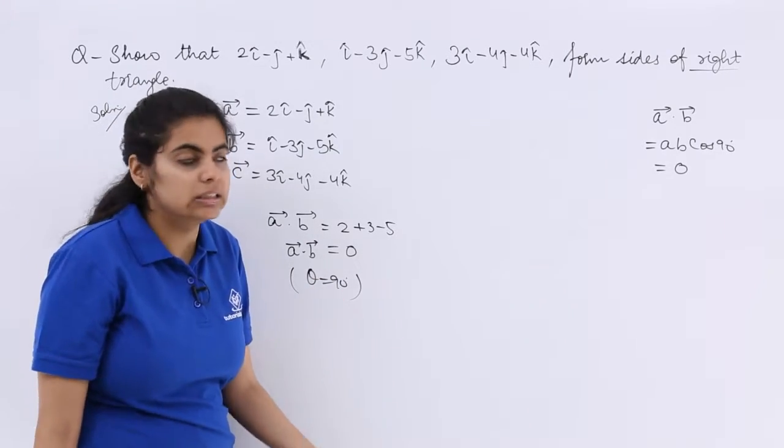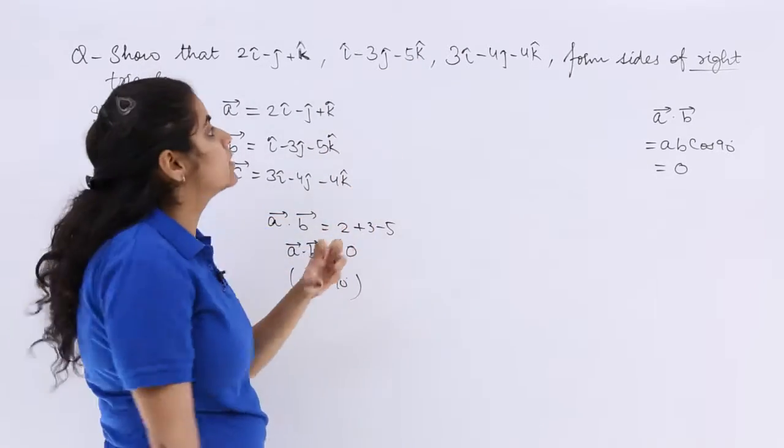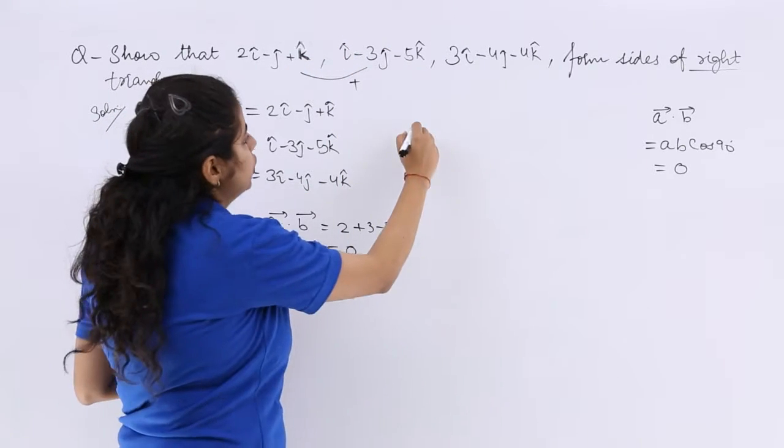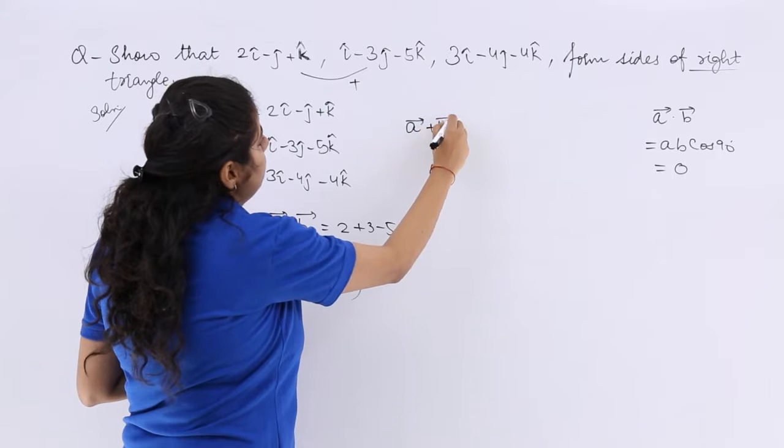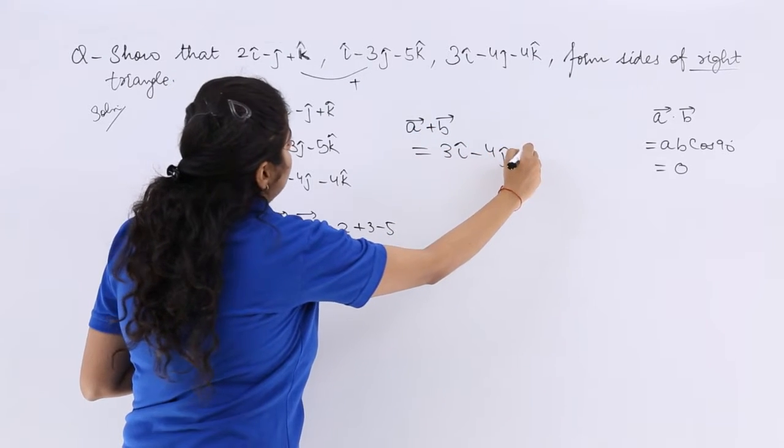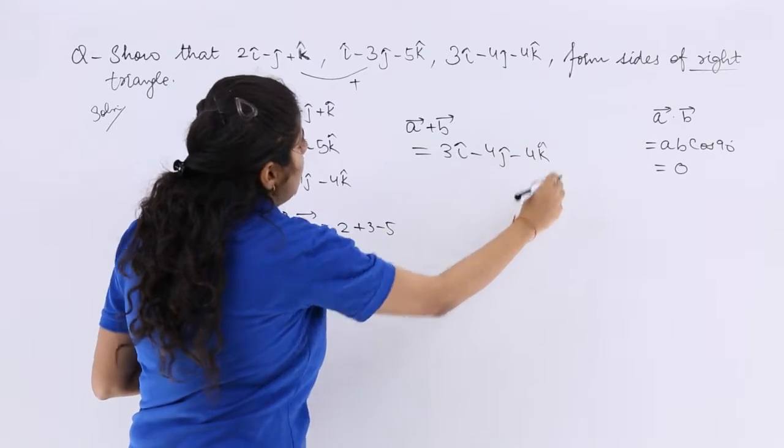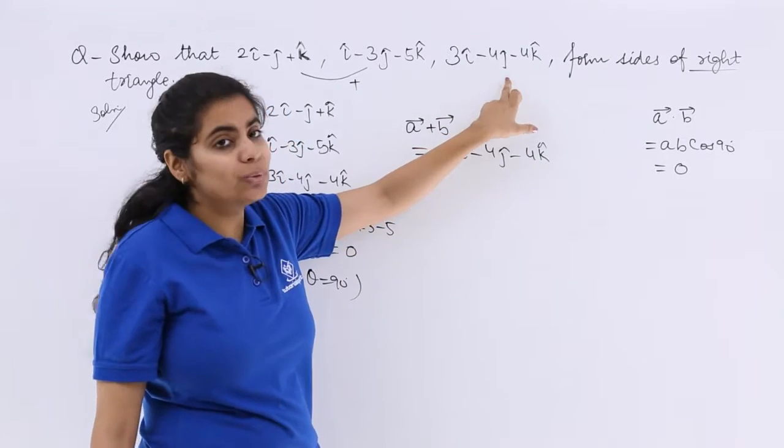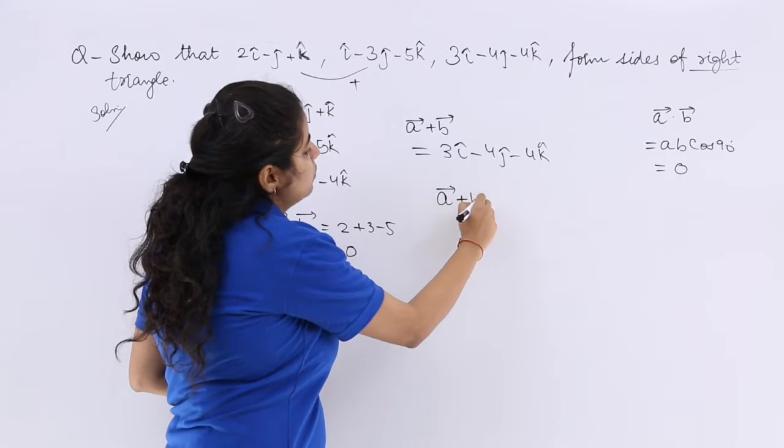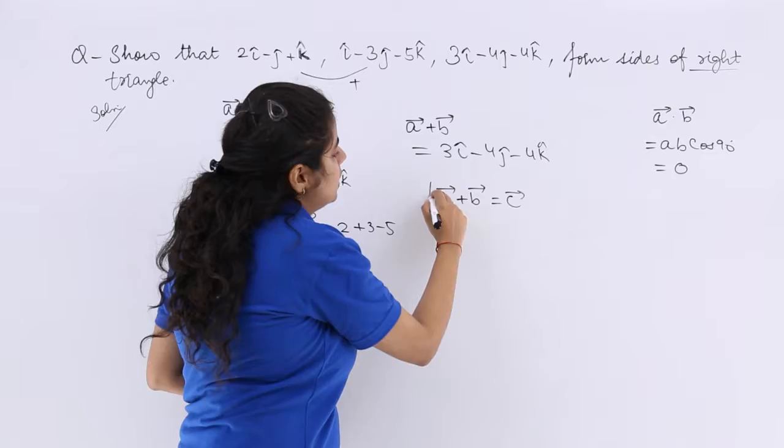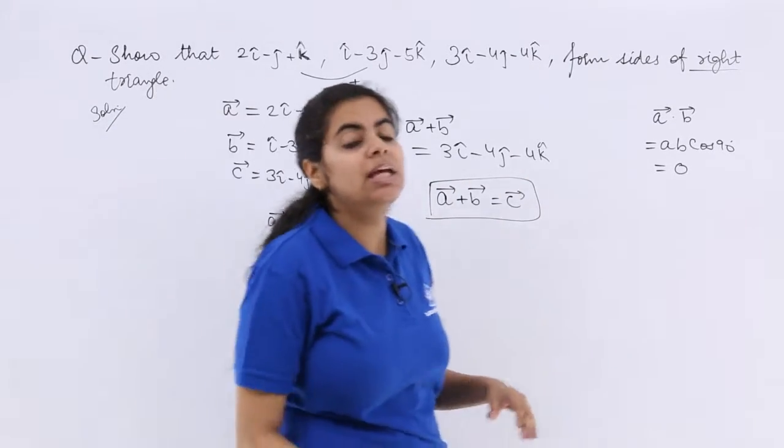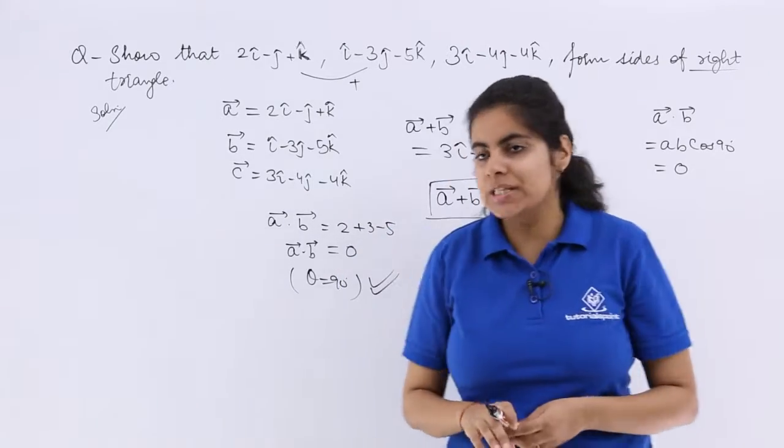So that means there is a right angle and these are the three sides. So if I add them, if I go for vector addition of A and B, I get 3i minus 4j minus 4k and is that addition not equal to the third vector? It is. So A plus B in vector addition is equal to C and also one pair is giving me perpendicularity condition satisfied.